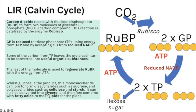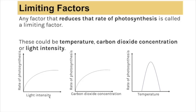The hexose sugar could be converted into another carbohydrate such as cellulose for cell walls, stored as starch, converted into glycerol and combined with fatty acids to make lipids, or combined with nitrates to form amino acids. You also need to know about limiting factors — anything that reduces the rate of photosynthesis — which could be light intensity, carbon dioxide concentration, or temperature.